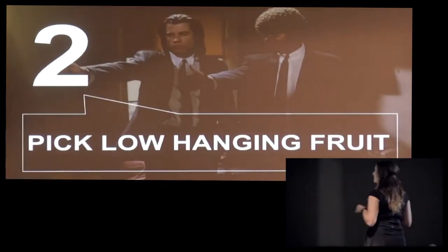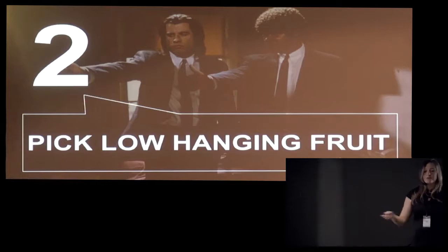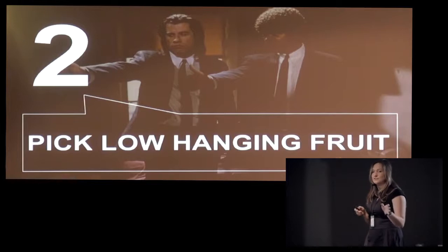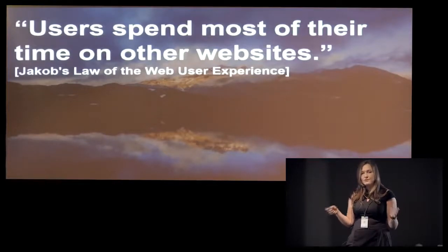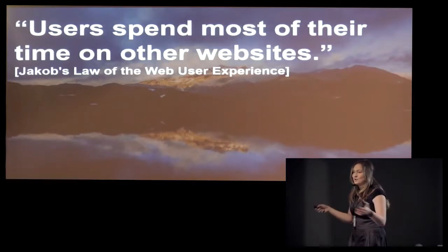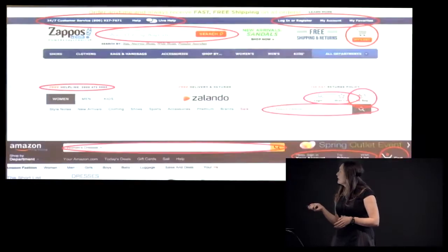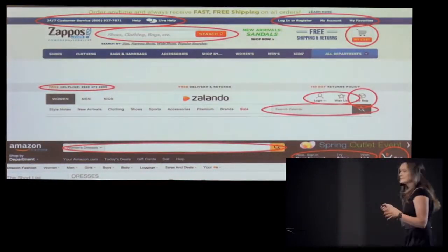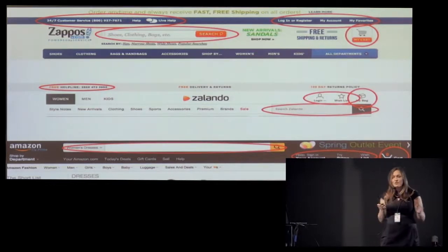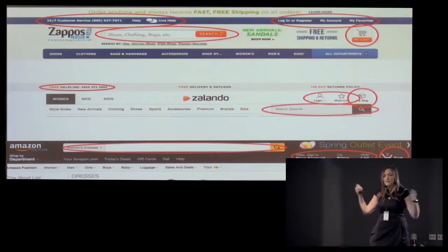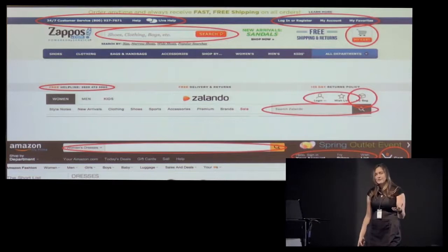The second building block is that you can pick the low-hanging fruit. Websites have been around long enough that there are certain standards people look out for — they're used to finding certain types of information in certain places. Jakob's Law of web user experience says users spend most of their time on other websites. They already know where to search for information; they're doing comparative shopping. In e-commerce headers, the shopping cart is always in the upper right-hand corner, help and customer support in the upper left, and the search bar made very visible.